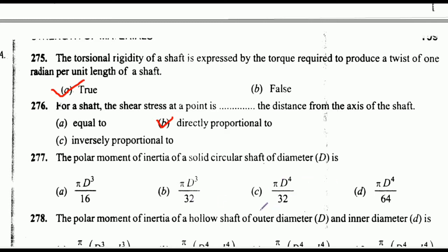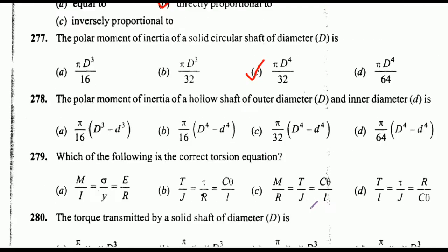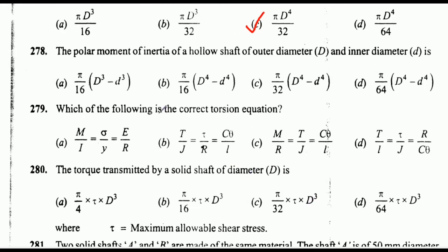The polar moment of inertia of a solid circular shaft of diameter d is — the correct answer is option C: πd⁴/32. The polar moment of inertia of a hollow shaft of outer diameter D and inner diameter d is — the correct answer is option C: π/32 × (D⁴ − d⁴).